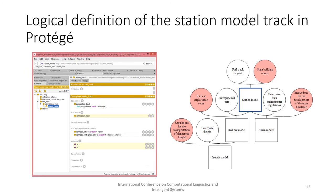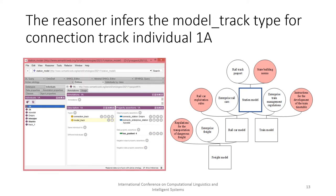The function of the sub-ontology of the station model is to align the enterprise database, the technical operation rules of enterprises, and the building standards of Ukraine for railway transport norms. For the development of the station model ontology, the track passport ontology and the restriction from the building standards norms for the connection tracks ontology are imported. They are linked by a necessary and sufficient condition bridging axiom. The track goes from the state of the enterprise track to the state of the user track.